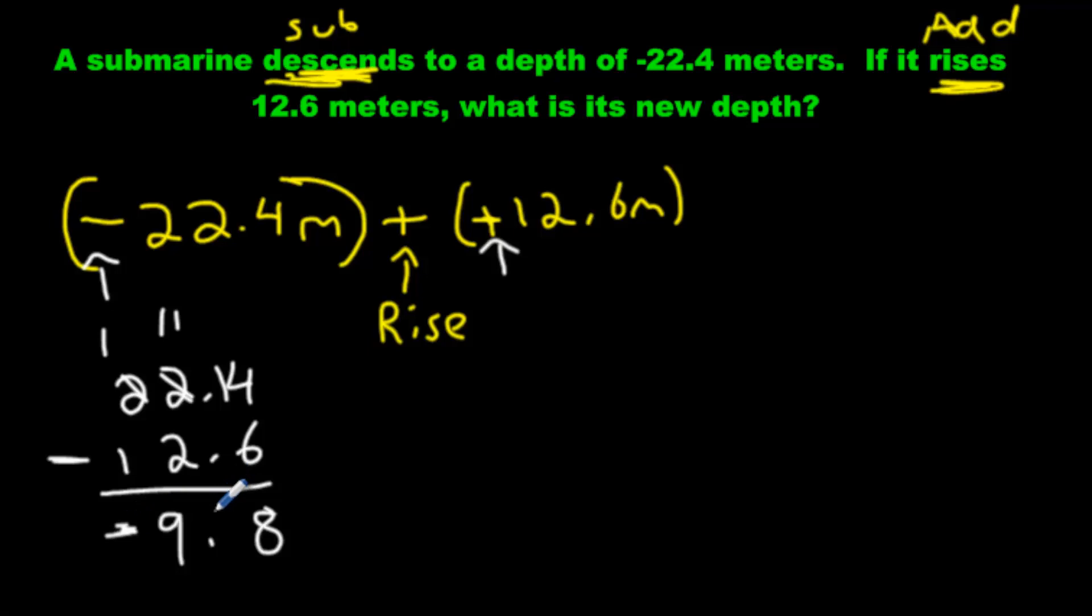Why does this even work? Because, look, if we start with negative 22.4, we have 22 negatives, roughly. And we add a few positives, only 12 of them. Each positive will wipe out a negative. But you're still going to have a lot of negatives left over, right? Which is why it'll remain a negative answer. 9.8 meters below the ocean.